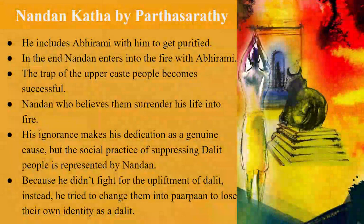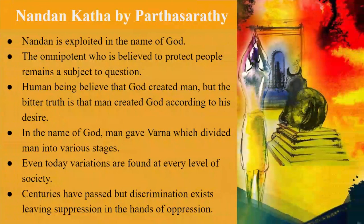His ignorance makes his dedication a genuine cause. But the social practice of suppressing Dalit people is represented by Nandana, because he didn't fight for the upliftment of Dalits; instead he tried to change them in a way that made them lose their own identity as Dalits. Nandana is exploited in the name of God. The omnipotent who is believed to protect people becomes the subject of question. Human beings believe that God created man, but the bitter truth is that man created God according to his desire. In the name of God, man gave Varna, which divided man into various stages. Even today, variations are found at every level of society; centuries have passed, but discrimination exists, leaving suppression in the hands of oppression.